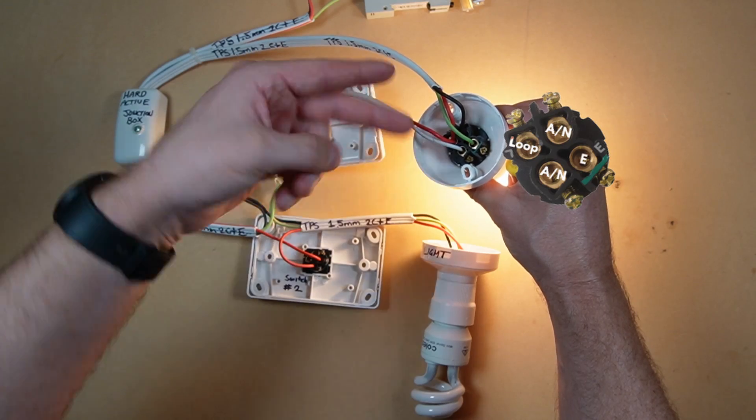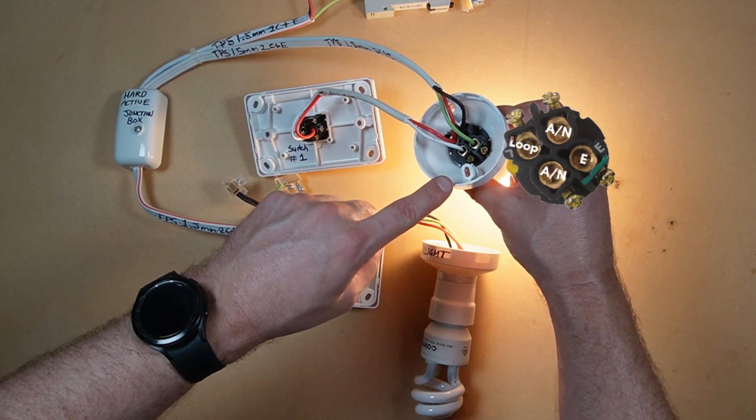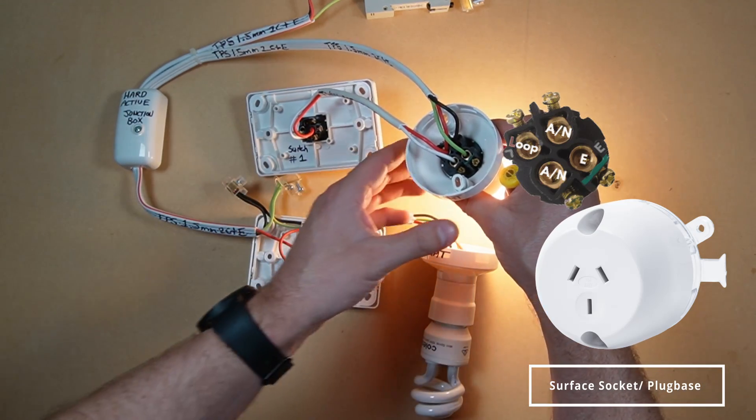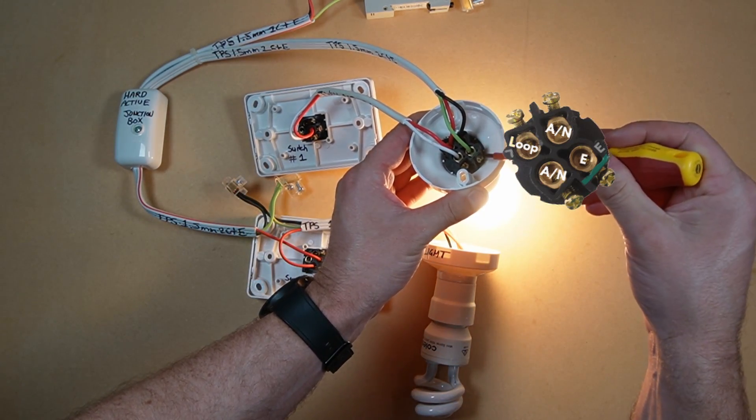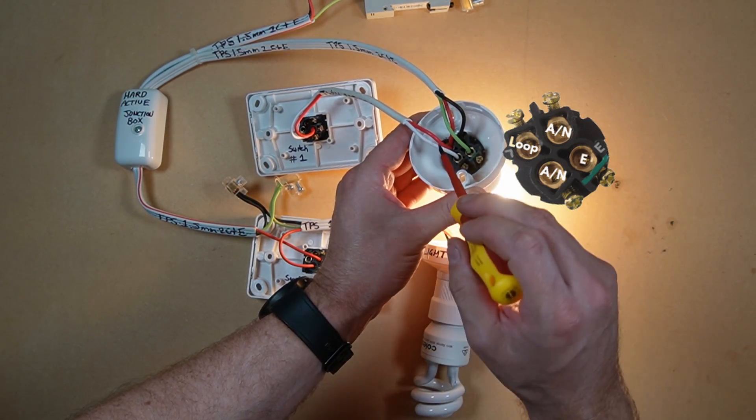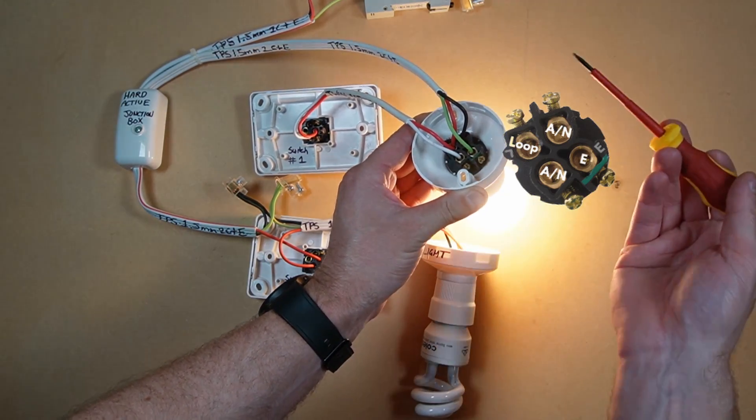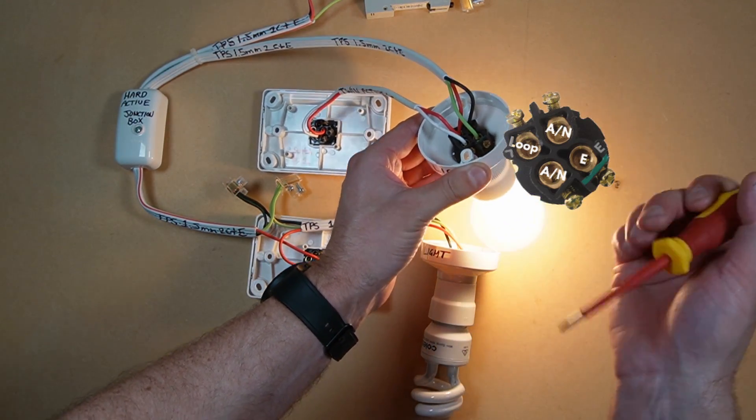The white active and the black neutral, it doesn't matter which way they go polarity-wise on a batten holder, but on a surface socket or something like that it will, so just follow the color coding. And the earth is labeled there, and the hard active just joins in the looping terminal. That's just a dead terminal which pretty much acts as a connector.